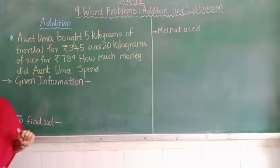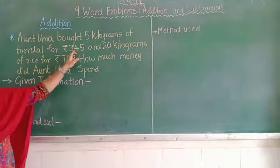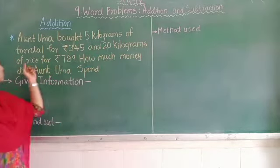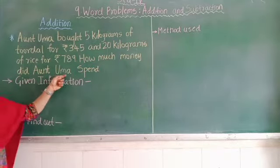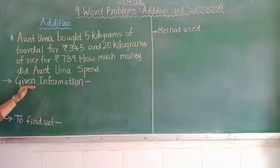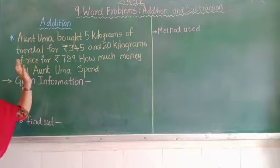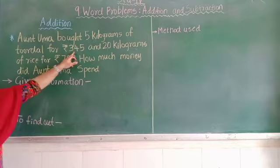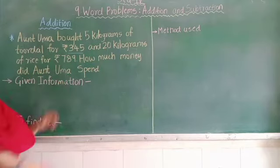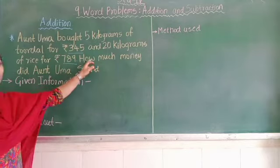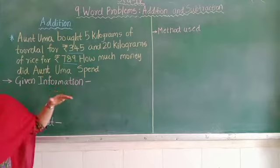Let us take one example from your textbook. Aunt Uma bought 5 kilograms of flour for Rs. 345 and 20 kilograms of rice for Rs. 789. How much money did Aunt Uma spend? Here, what they have given us — Uma has bought 5 kilograms of flour for Rs. 345 and 20 kilograms of rice for Rs. 789. What they are asking us: how much money did Aunt Uma spend?